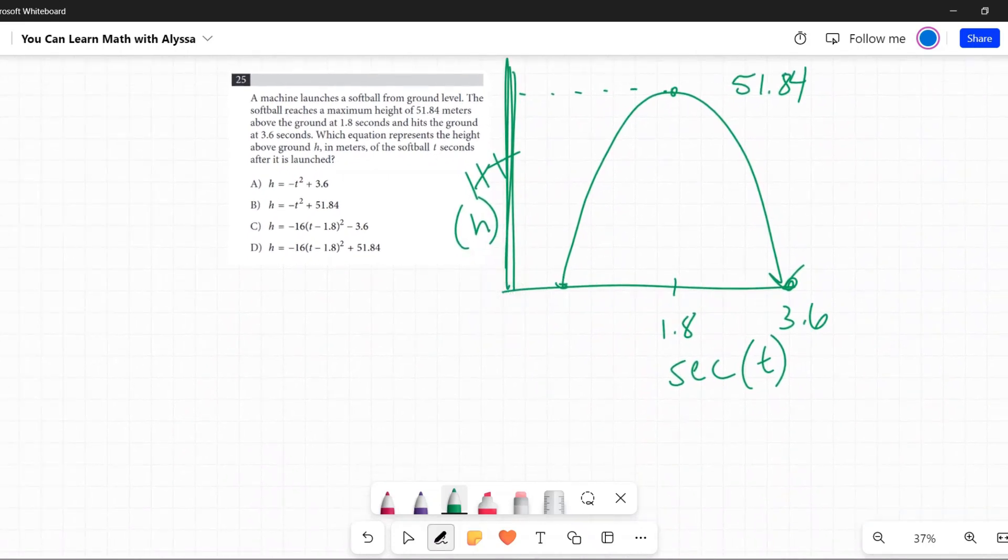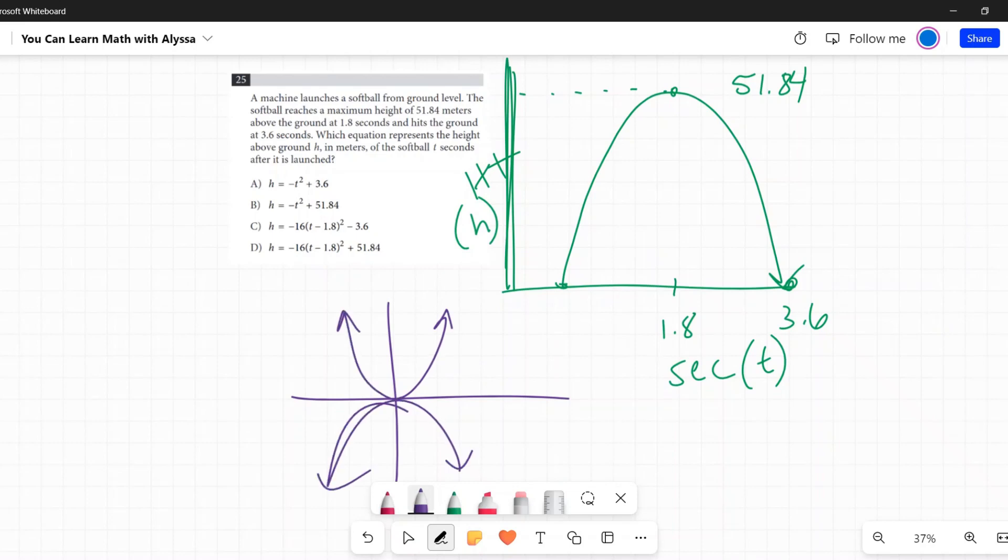Easy peasy this way, way easier. So t squared is a parabola. If t squared was written it would be like this, but it's not, it's down. So what happened? First it was made negative, it's a negative t squared. If you notice all four of these are negative.